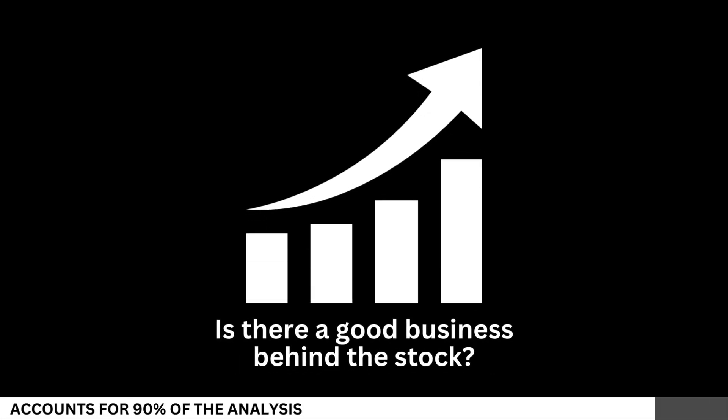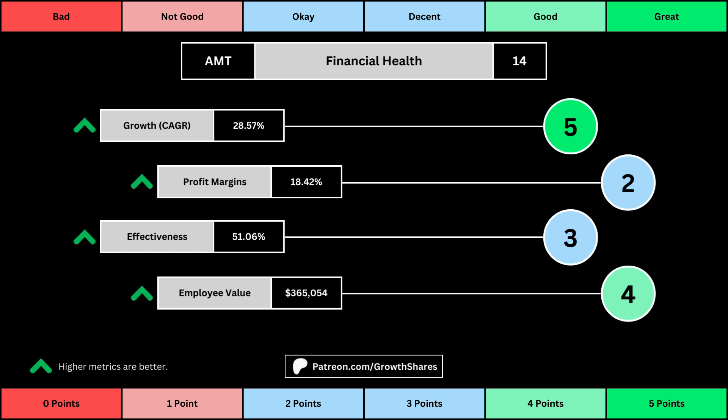We'll look at 14 metrics to determine the business fundamentals. The first set of metrics deal with the company's financial health, with its projected earnings growth for the next five years, its profit margins, its effectiveness — which looks at the company's returns on equity, assets, and invested capital — and then the employee value, which looks at how much value the average employee adds to the business. You can see the values for each of these metrics, as well as the point totals awarded in the bubbles.